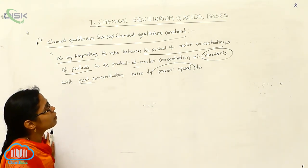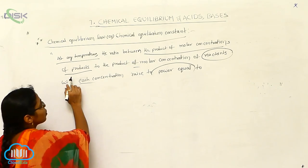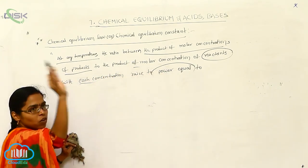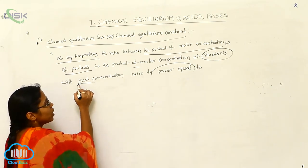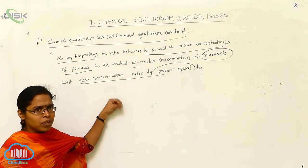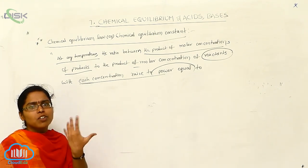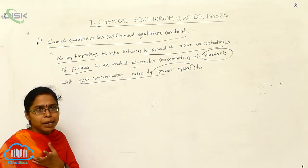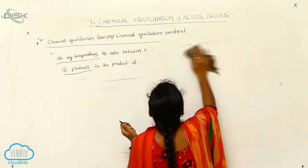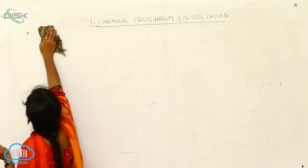The chemical equilibrium law or equilibrium constant: at any temperature, the ratio between the product of molar concentration of the products to the product of molar concentration of reactants is also called as chemical equilibrium. The ratio between the concentration of products by concentration of reactants is simply called chemical equilibrium. So based upon chemical equilibrium, two constants are there: Kp and Kc. Now we have to discuss the relationship between Kp and Kc — it is important for exam questions.